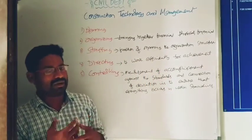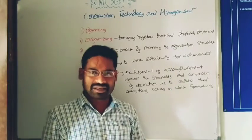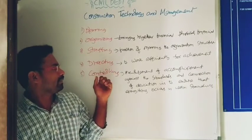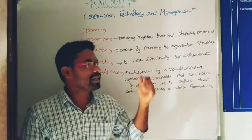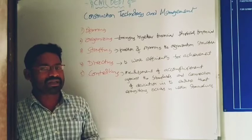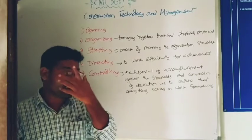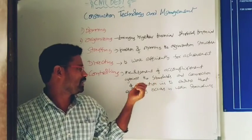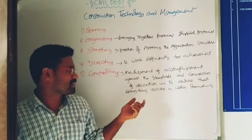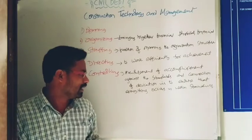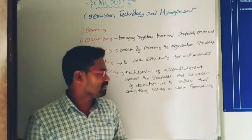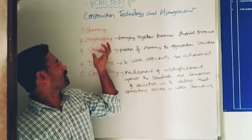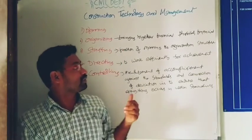There will be many workers — skilled and unskilled labor — and these are all called staff. Directing means working efficiently for the achievement of goals. Controlling is the measurement of accomplishment against standards and the correction of deviations to ensure that everything occurs within the standards.